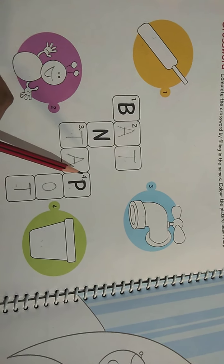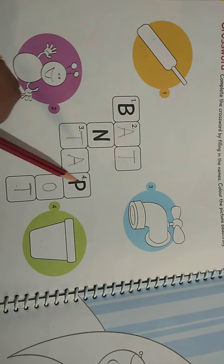What was it? Crossword puzzle. Where were some spellings? B.A.T. Bat. A.N.T. Ant. T.A.P. Tap. P.O.T. Pot.